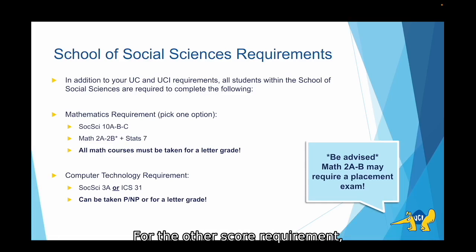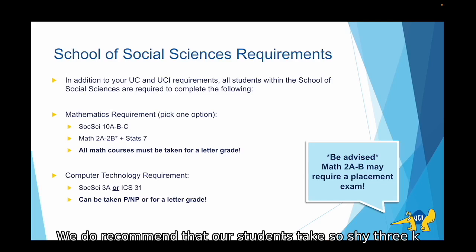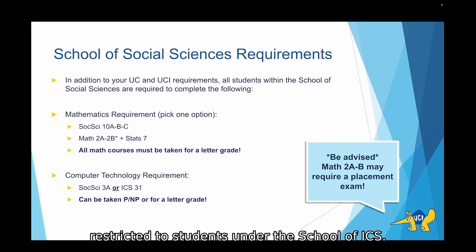For the computer technology requirement you can choose whether you'd like to take SOCI 3A or ICS 31 which is an intro to computer programming class. This requirement you can choose to take for pass no pass or for a letter grade. We recommend that our students take SOCI 3A as that class is open to all social sciences majors while ICS 31 is initially restricted to students under the school of ICS.